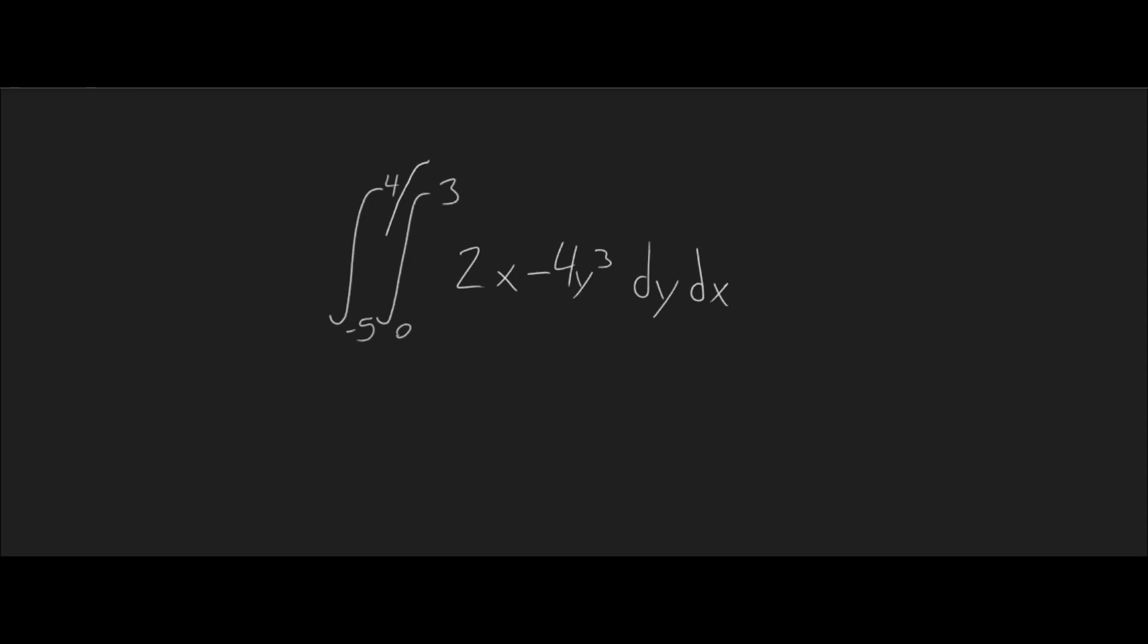So, you can sort of imagine that you have two separate integrals. And we're going to calculate the first integral first, the inside integral first. So, this is just the integral of 0 to 3 of 2x minus 4y cubed dy. So, we're integrating y.